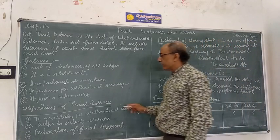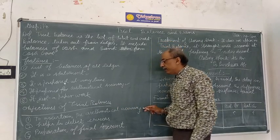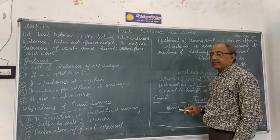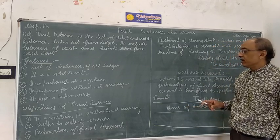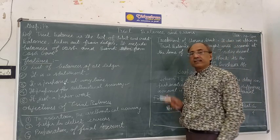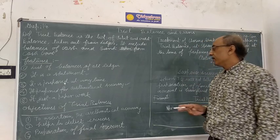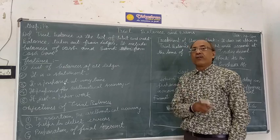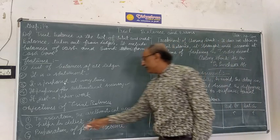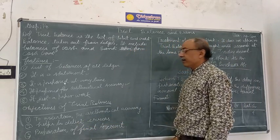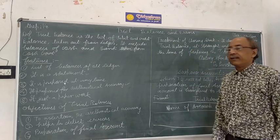Now what is the objective of Trial Balance? The objective of Trial Balance is to check the arithmetical accuracy. You have to check the journal, ledger, and the balances which have been derived from the last year. Now to detect the error and to check the balance.